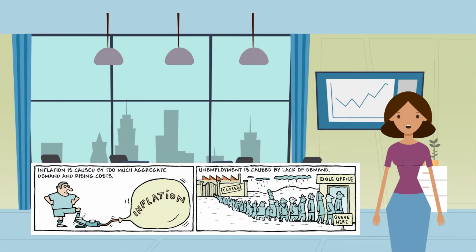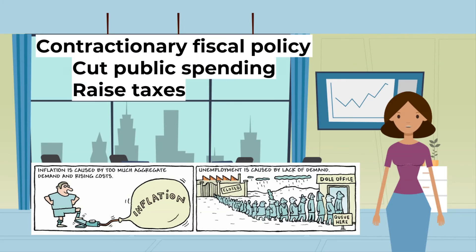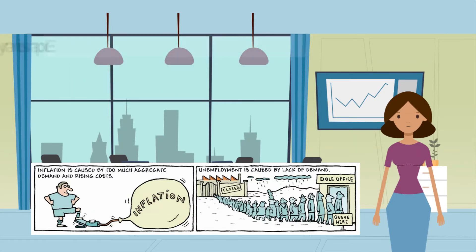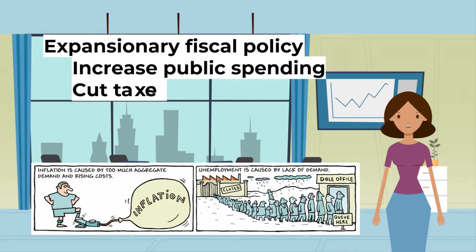Changes to fiscal policy can be labeled in two ways. Contractionary fiscal policy is when we cut public spending and raise taxes. Expansionary fiscal policy is when we increase public spending and cut taxes.